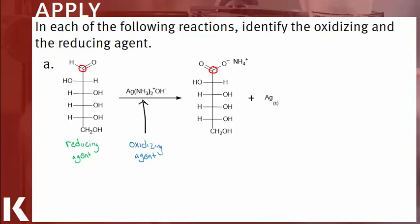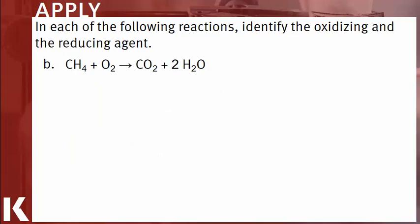Tollens' reagent therefore must be acting as the oxidizing agent since it is causing the oxidation of the sugar. For part B, methane on the reactant side has four bonds to hydrogen, so its oxidation number is negative four. It's converted to carbon dioxide on the product side, which has four bonds to oxygen, so carbon is assigned an oxidation number of positive four. Negative four to positive four indicates this molecule is donating or losing electrons to become more positive — loss of electrons is oxidation — which means methane is acting as a reducing agent.